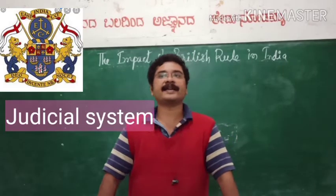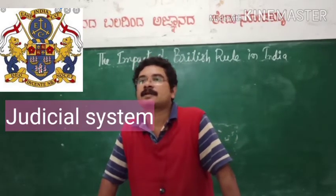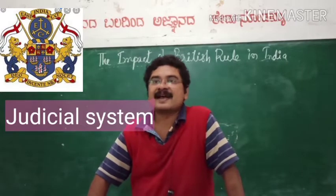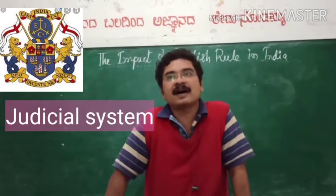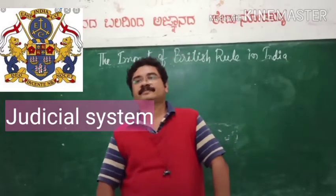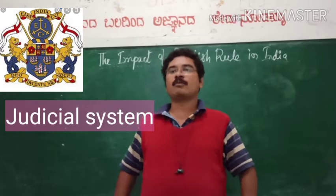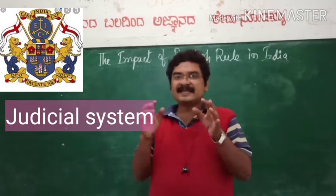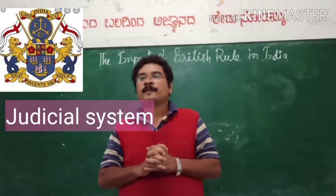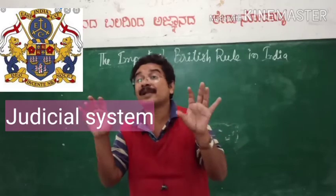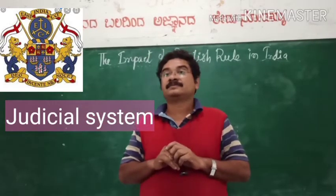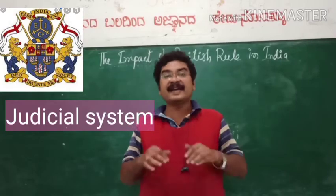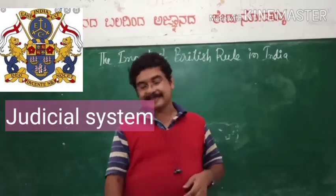Under dual governance, the authority to collect land taxes, civil and judiciary matters were given to Indian officials, whereas the British retained the authority of managing the revenue collected. Later on, the British started bringing a more centralized judicial system in India. With the implementation of this system, the British overtook the authority of the Mughal and established their supremacy in India.